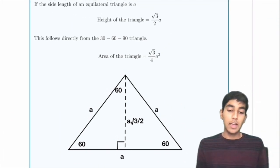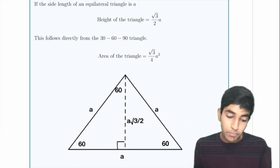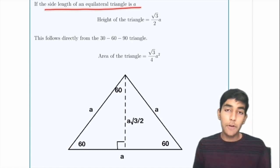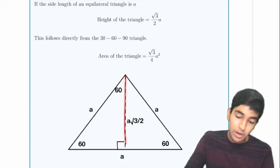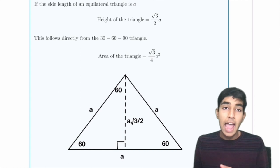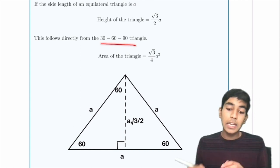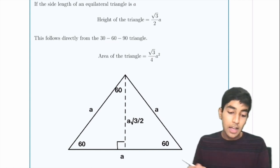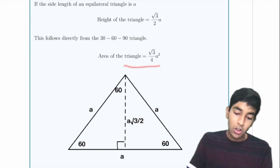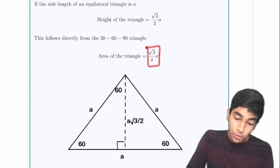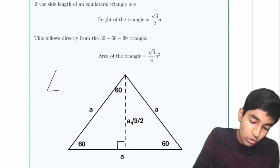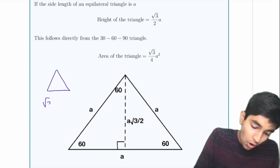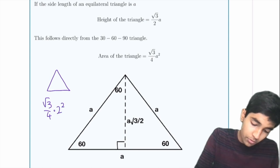Now special triangles. For an equilateral triangle with side length A, the height is (√3 / 2) × A. The area of an equilateral triangle — this is very important — is (√3 / 4) × A². So an equilateral triangle with side length 2 has area (√3 / 4) × 4 = √3.